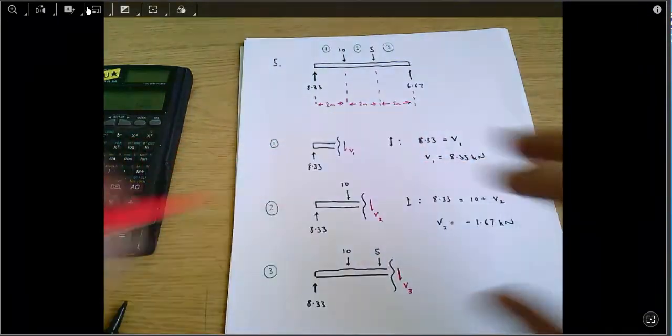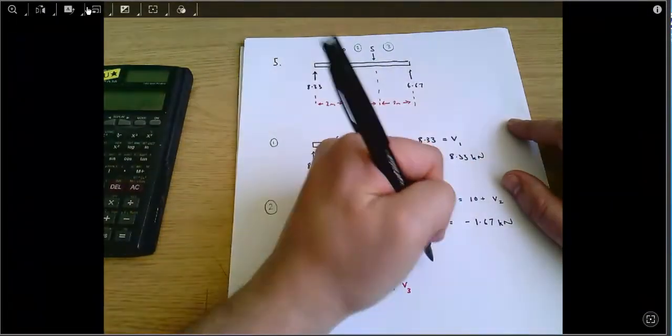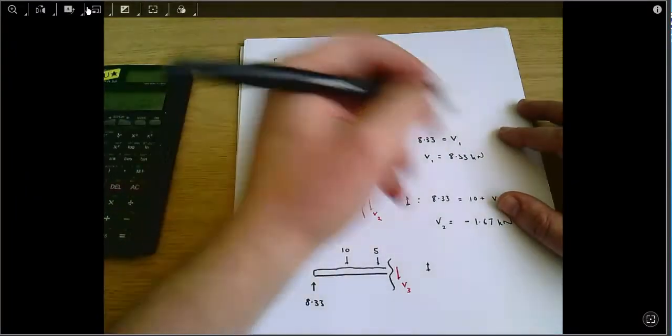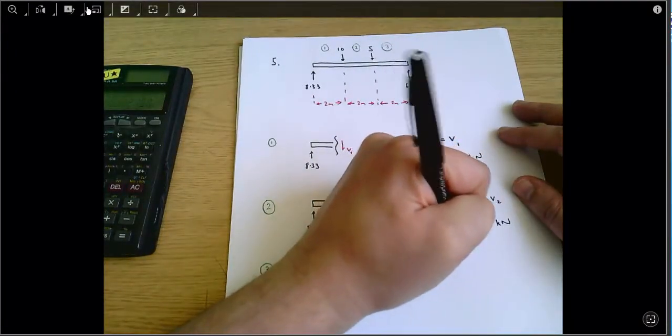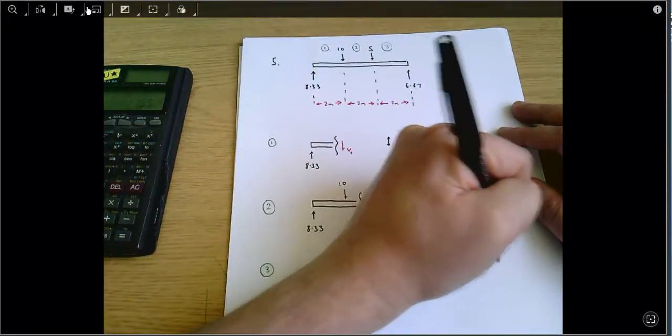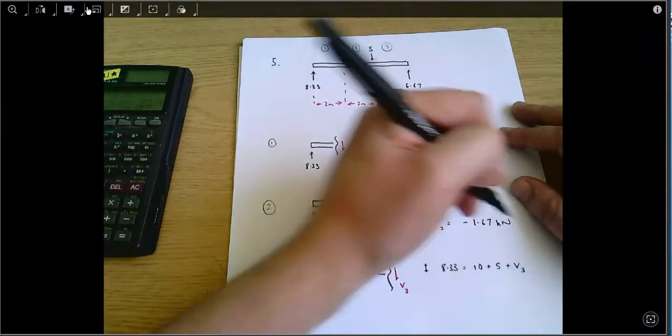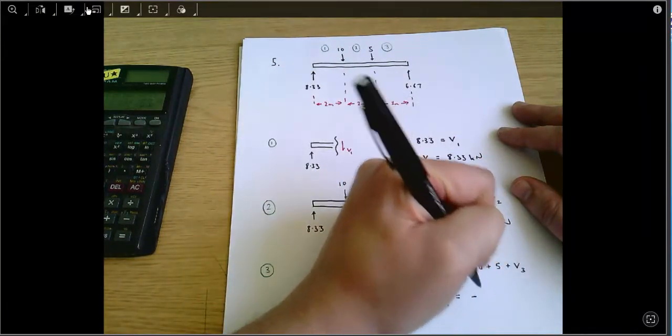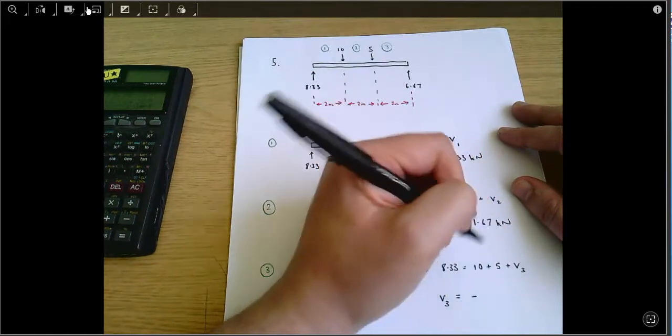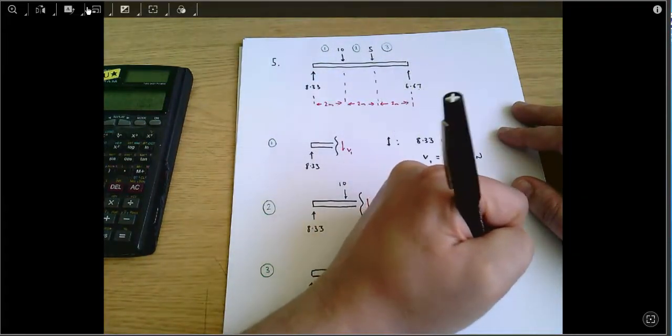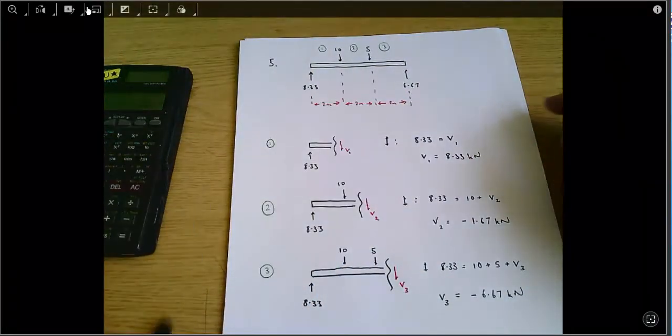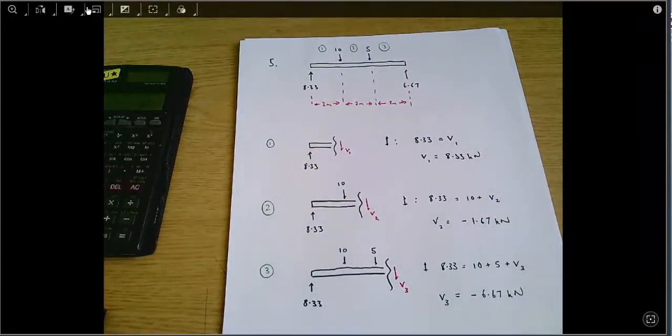And again we can say equilibrium says forces acting upwards equal forces acting downwards. 8.33 equals, well all of these forces act downwards, 10 plus 5 plus V3. And so V3 is going to be, when I rearrange all of this, I get 8.33 minus 15 which is minus 6.67 kilonewtons, and those are the three answers that I need.